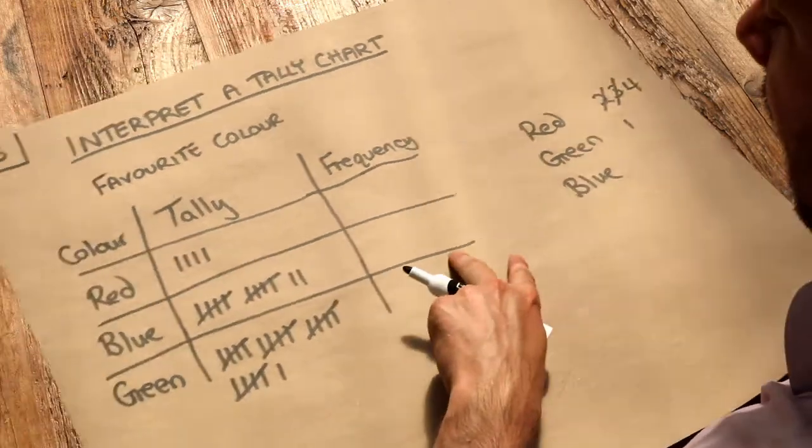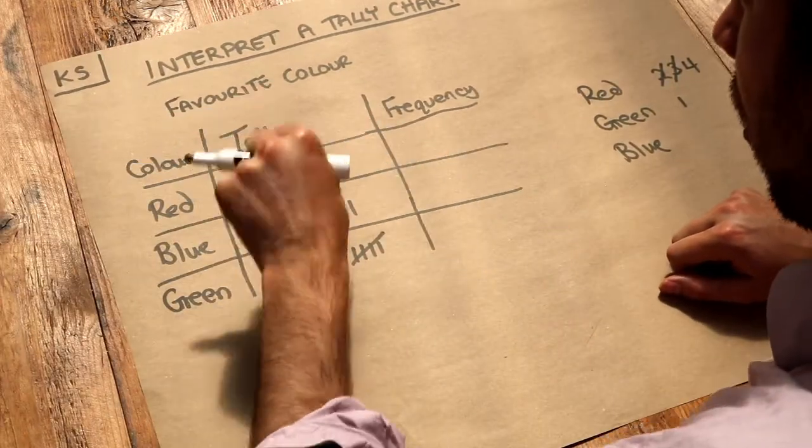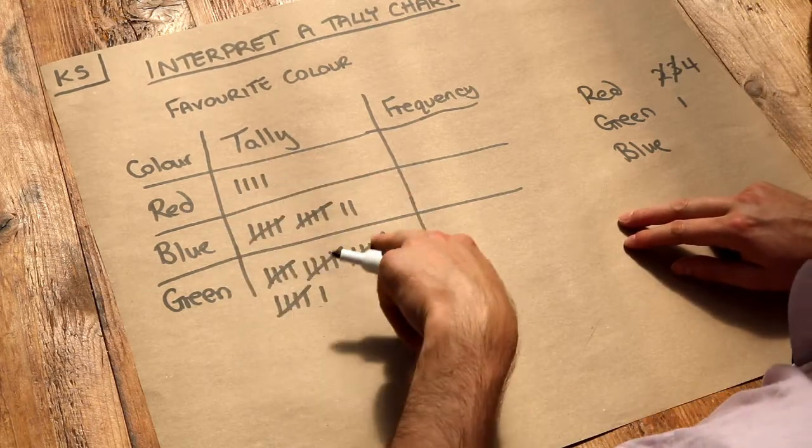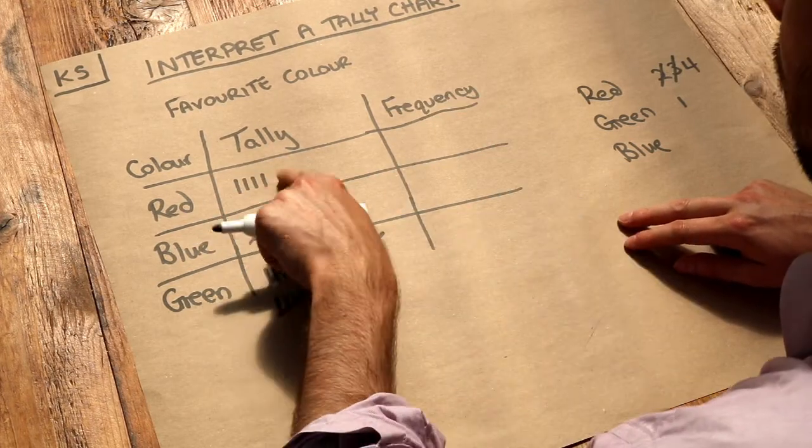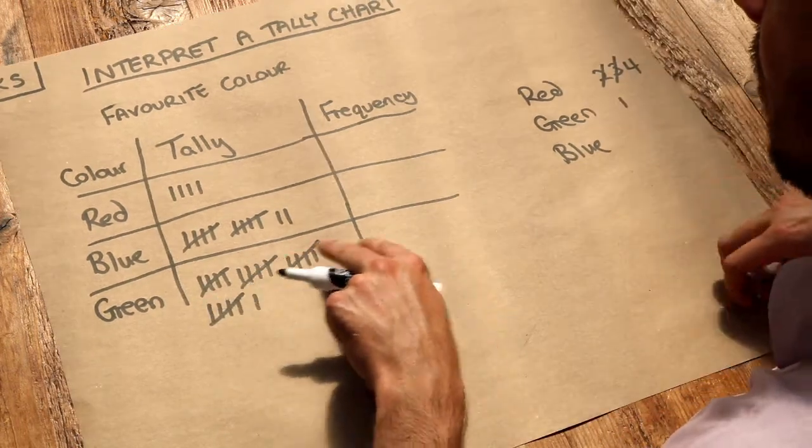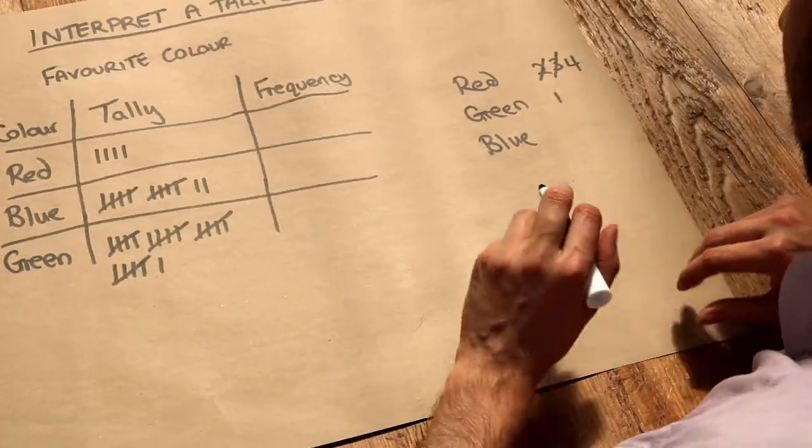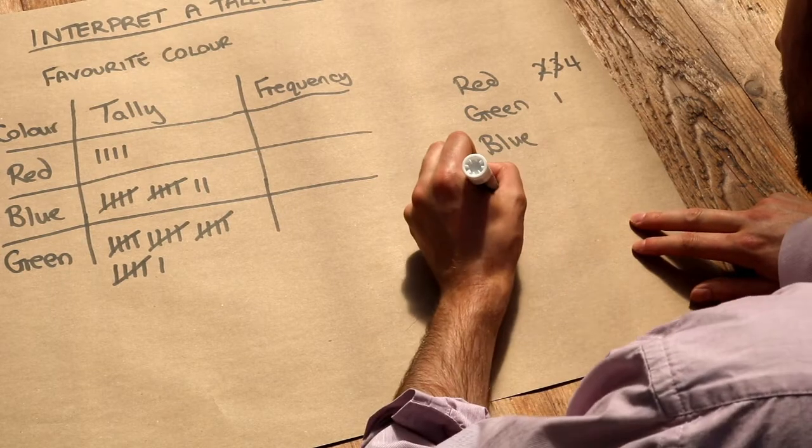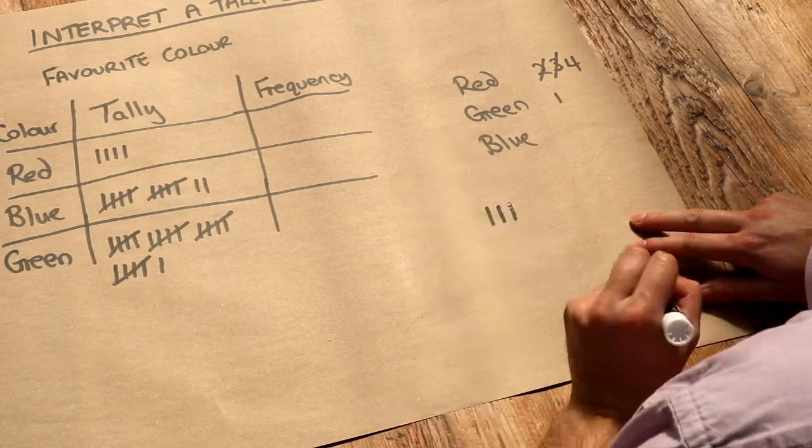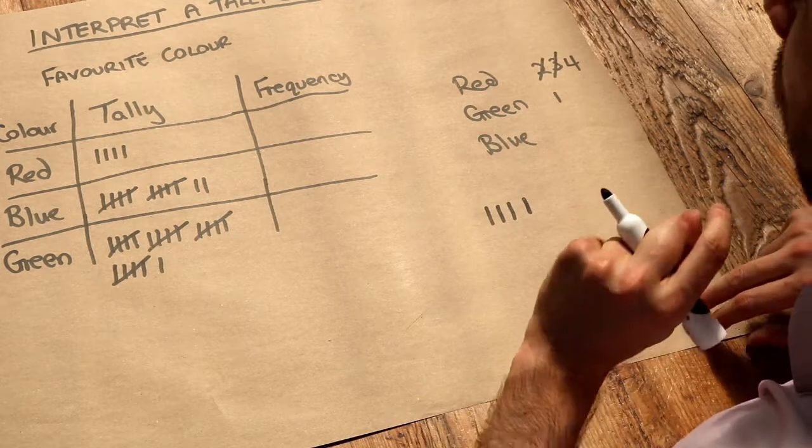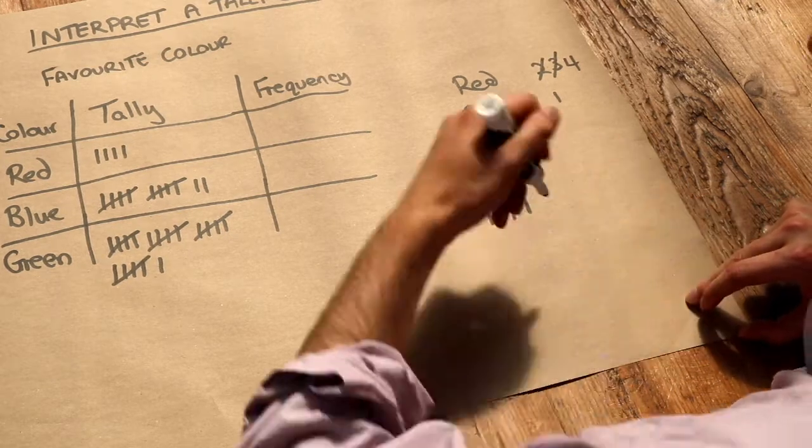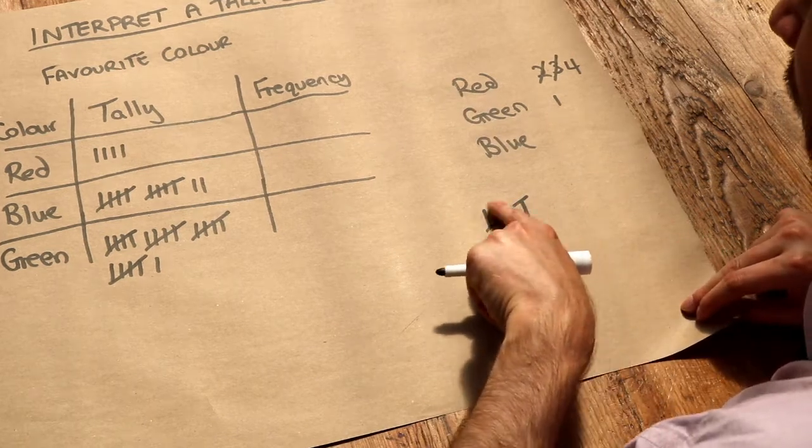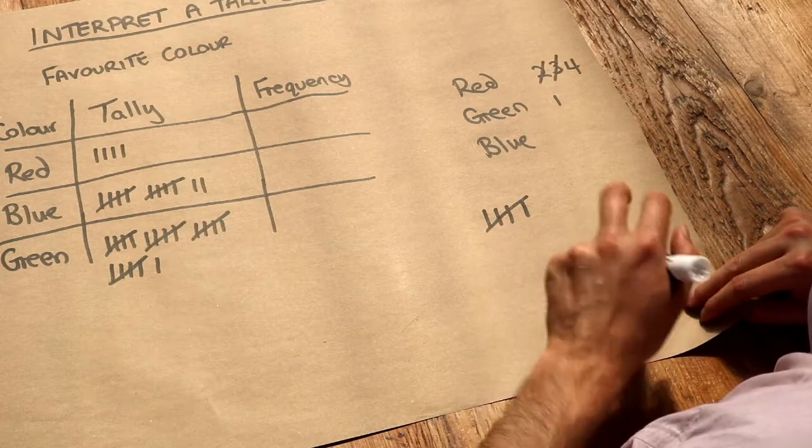The idea of a tally is that we can just put a little mark each time someone likes a color. Once we finish our survey, we count how many marks we have. The way tallies work: we put one mark each time, then another, then another, then a fourth mark. Once we get to five, we put a diagonal mark through them. Each group with that diagonal slash represents five people, which makes it much easier to read.